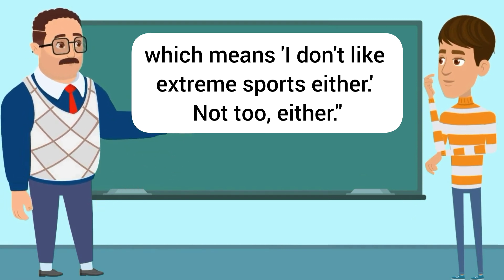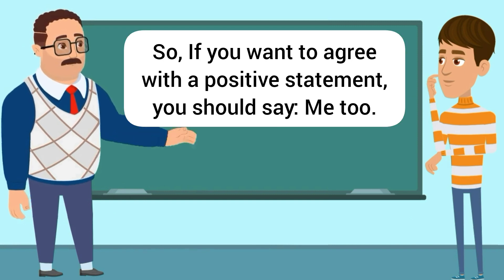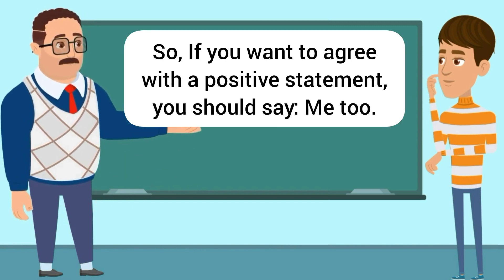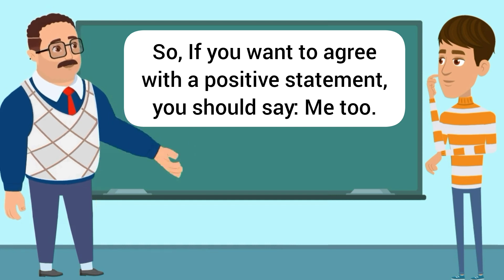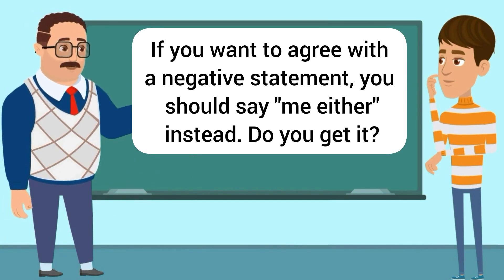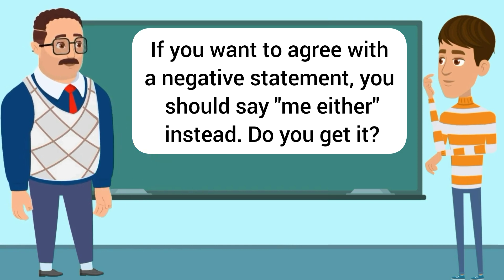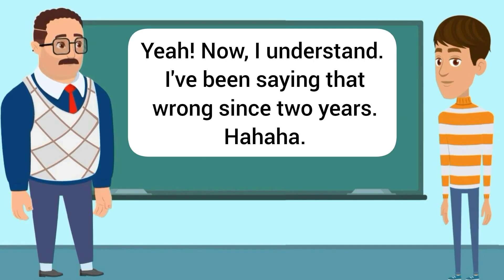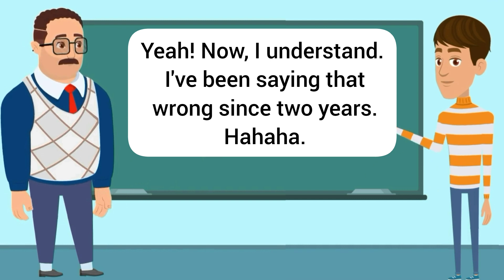Not 'too' — 'either.' So if you want to agree with a negative statement, you should say 'me either' instead. Do you get it? Yeah, now I understand. I've been saying that wrong since two years.